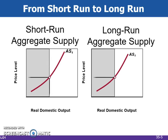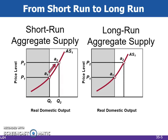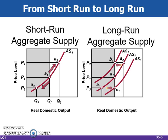Here we see the movement along the short run aggregate supply curve in the first graph as prices increase or decrease. In the second graph, we see the short run aggregate supply curve shift up or down as prices increase or decrease. The new long run aggregate supply curve is drawn vertically at the full employment output level, reflecting the new price levels. In the long run, all things move back to equilibrium.